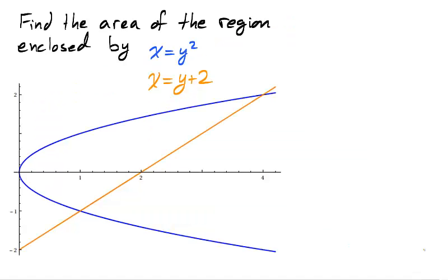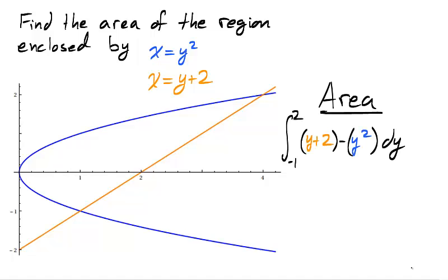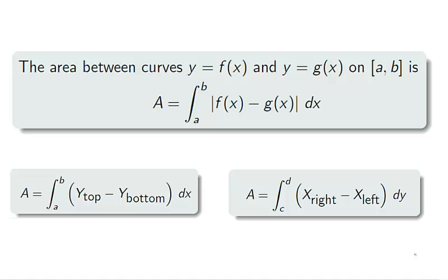The graph depicts x equals y-squared as the blue function, and x equals y plus 2 as the orange function, both with respect to y. The curves intersect at y values 2 and negative 1, and the right-most function is orange while the left-most function is blue. Therefore, the area can be found using the integral from negative 1 to 2 of the right function, y plus 2, minus the left function, y-squared, taking the integral with respect to y. To summarize, the total area between curves is found by taking the integral of the absolute value of their difference. If the curves can be viewed as functions with respect to x, integrate the top minus the bottom function. If the curves can be viewed as functions with respect to y, integrate the right minus the left function.